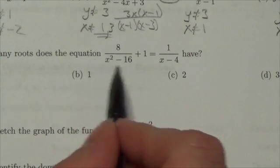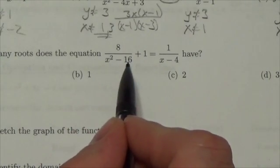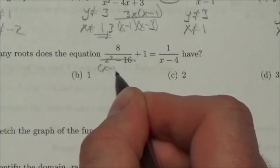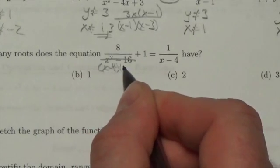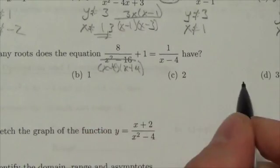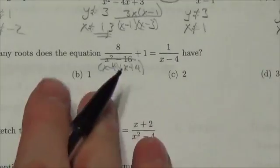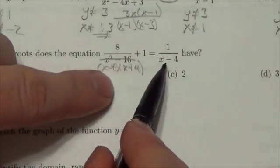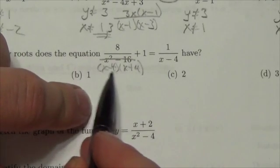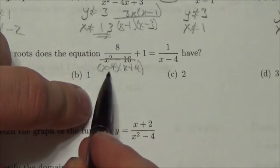Notice that I've got x squared minus 16 in the denominator, and that can be factored into x minus 4, x plus 4. That's a difference of squares, and I've got a shared factor here. This denominator has got the same factor as this one right here.